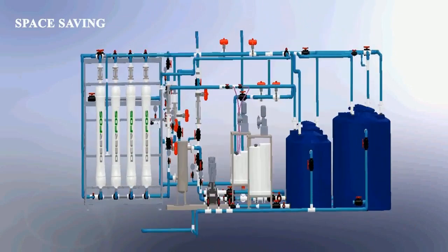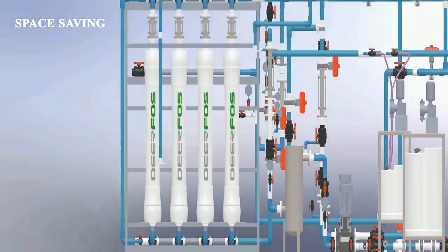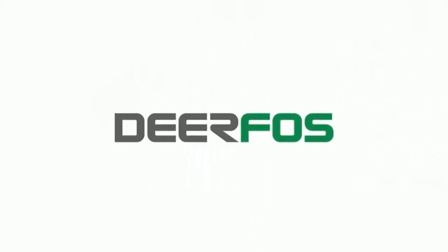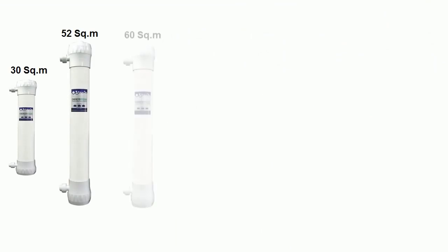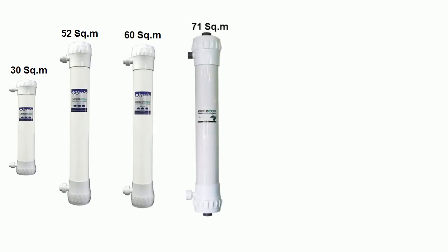The Deaphos membrane provides various surface areas in UF modules: 30 square meters, 52 square meters, 60 square meters, 71 square meters, and 73 square meters.